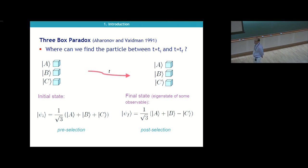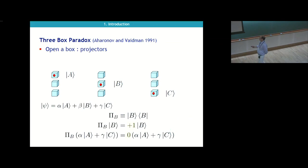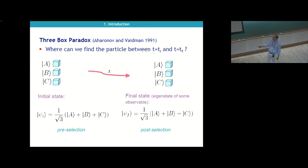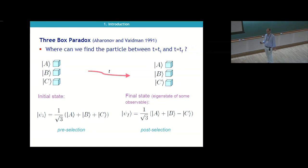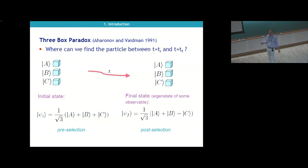You make a projective measurement and get one or zero. If you want to look for the particle in box A, you make a projective measurement — maybe you find one, it's there, or zero, it's not. If the particle is not in box A, you're in the subspace B plus C, but this subspace is orthogonal to the final state you're supposed to obtain. The conclusion is that the particle must have been in box A, because if you don't find the particle in box A, you can never reach the final state.